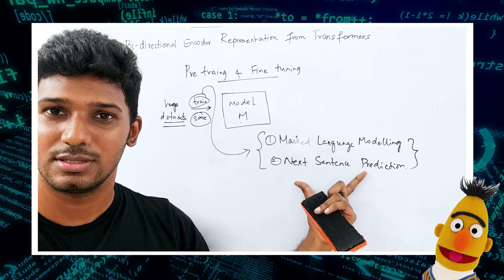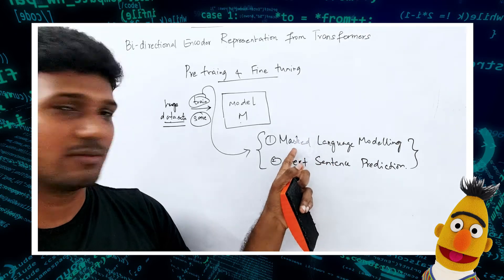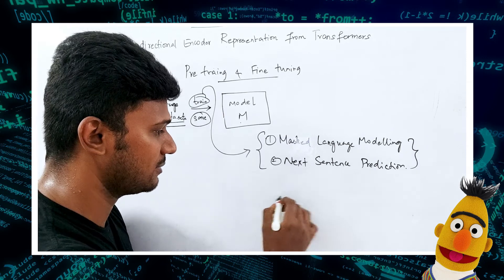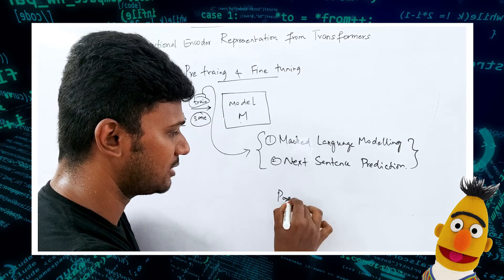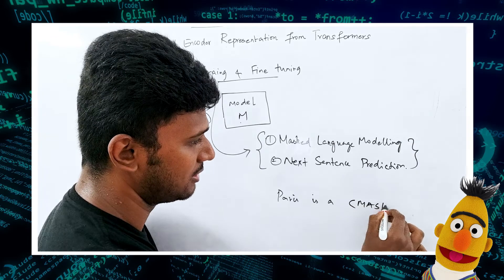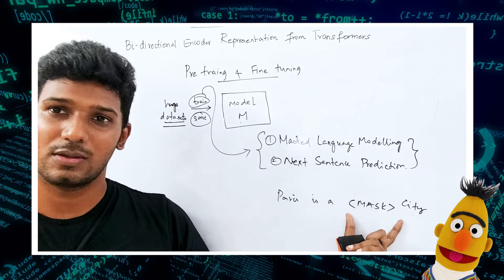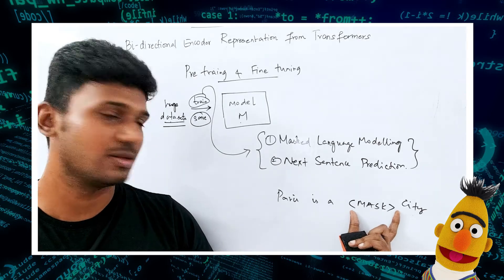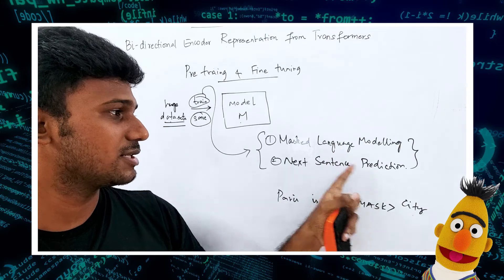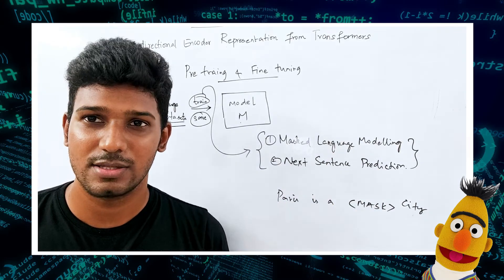We will see these in detail in upcoming videos, but to give you a quick overview: Masked Language Modeling is where you have some masked tokens — for example, 'Paris is a [MASK] city' — and the model predicts what word comes in place of the mask. That is called Masked Language Modeling.